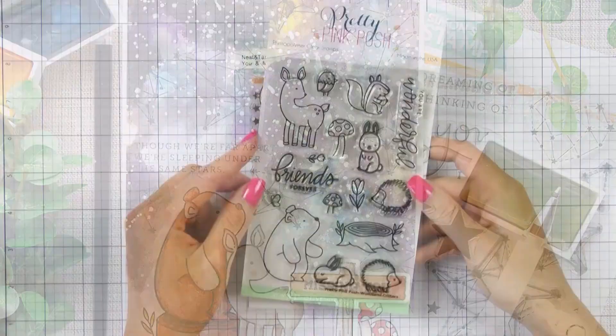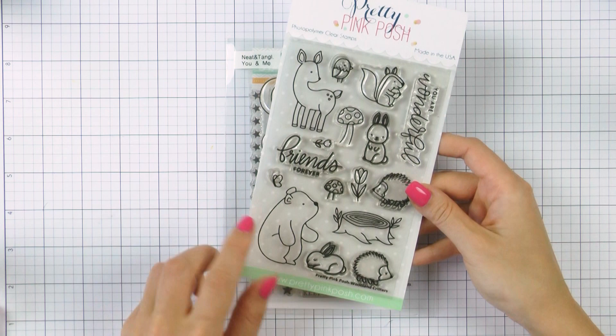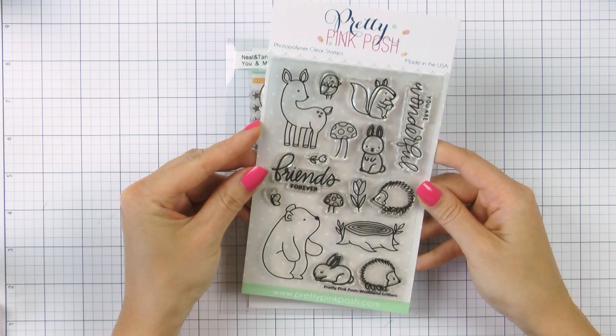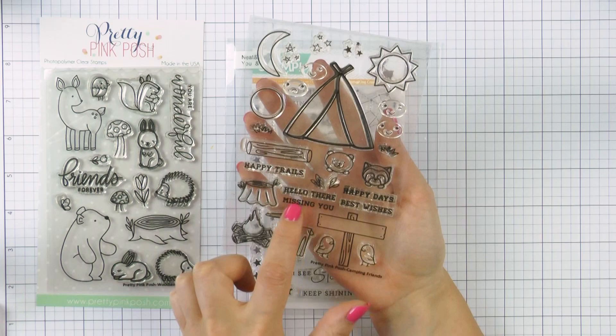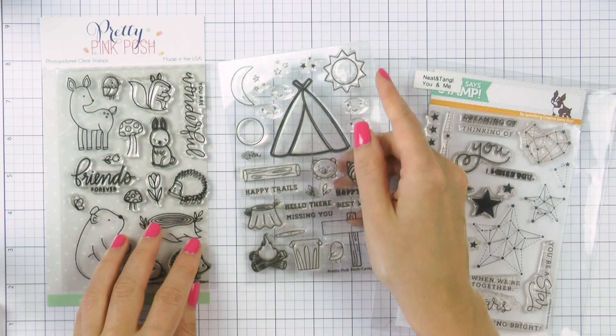I'm going to use a new Woodland Critters stamp set from Pretty Pink Posh to stamp an adorable bear and a little deer to create a scene. I'm also using a Camping Friends stamp set, also from Pretty Pink Posh, this is an older set, but I've discovered that it works really well with this new Woodland Critters set and I'm going to use the wooden sign from here as well as the missing you sentiment to add to my scene.